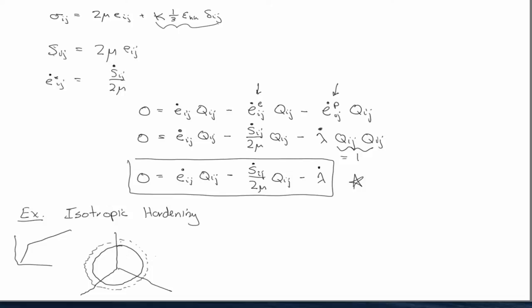There is another type of hardening called kinematic hardening. And in kinematic hardening, the yield surface translates. So if you only had kinematic hardening without isotropic hardening, the yield surface would stay the same diameter but it would move in stress space.